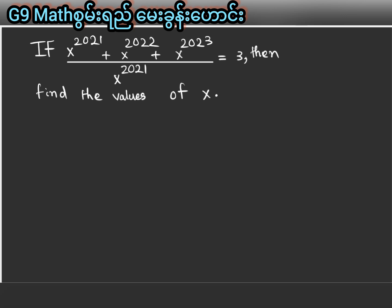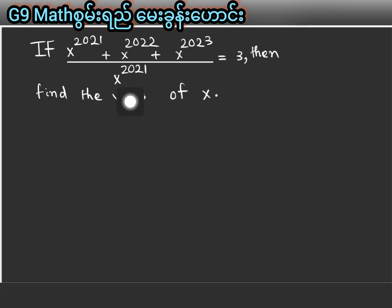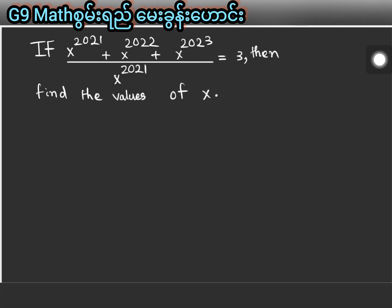If x power 2021 plus x power 2022 plus x power 2023, divided by x power 2021, equals 3, then find the values of x.